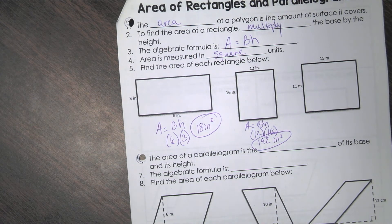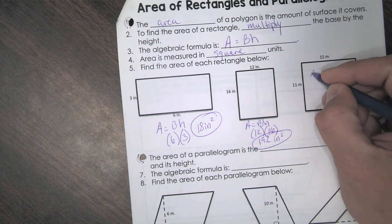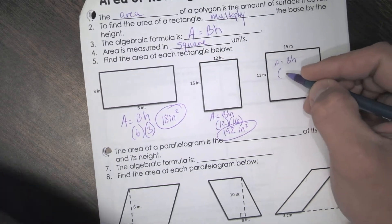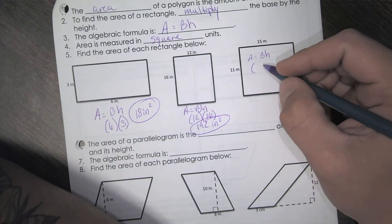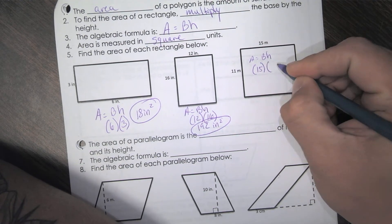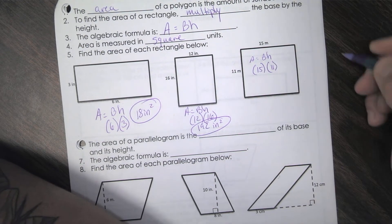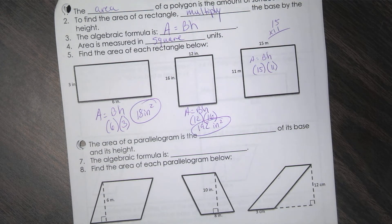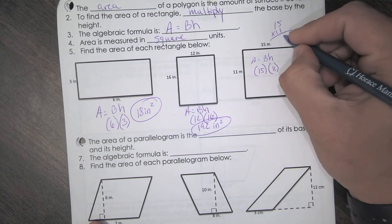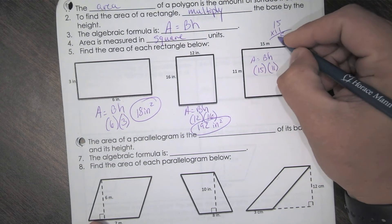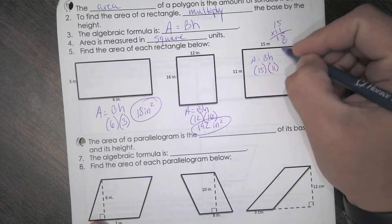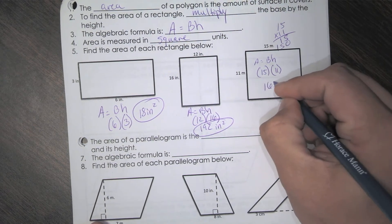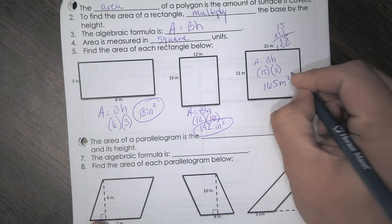So then the last one. Same thing. Area equals base times height. Well, the base here is what? 15. What's the height? 11. So then we just multiply. What's 5 times 1? 5. 1 times 1. 1. Drop down. 1 times 5. 5. And 1 times 1. So that would be 165 meters squared.